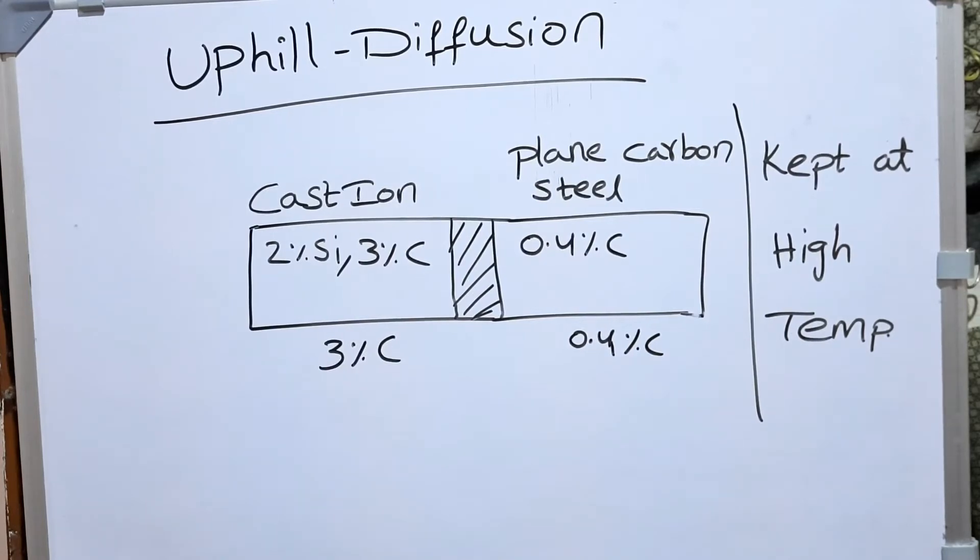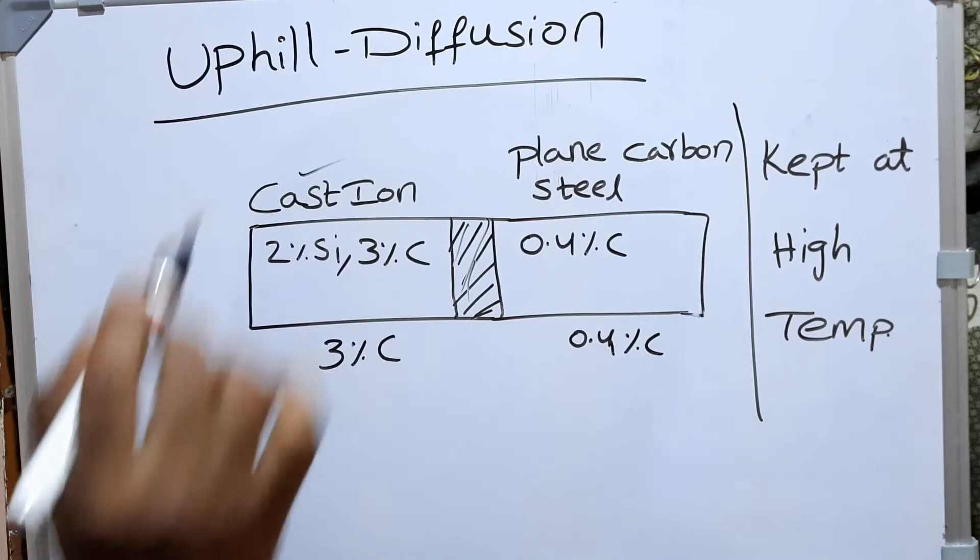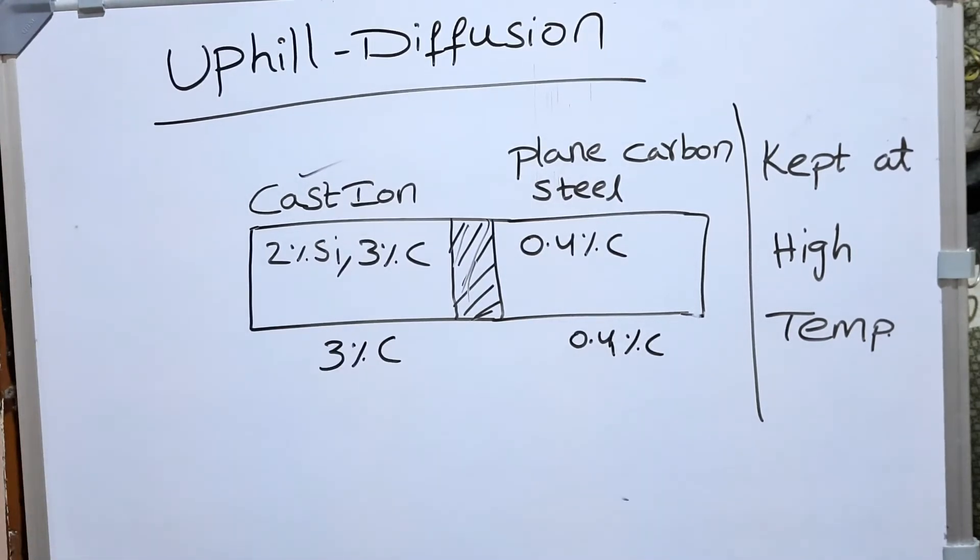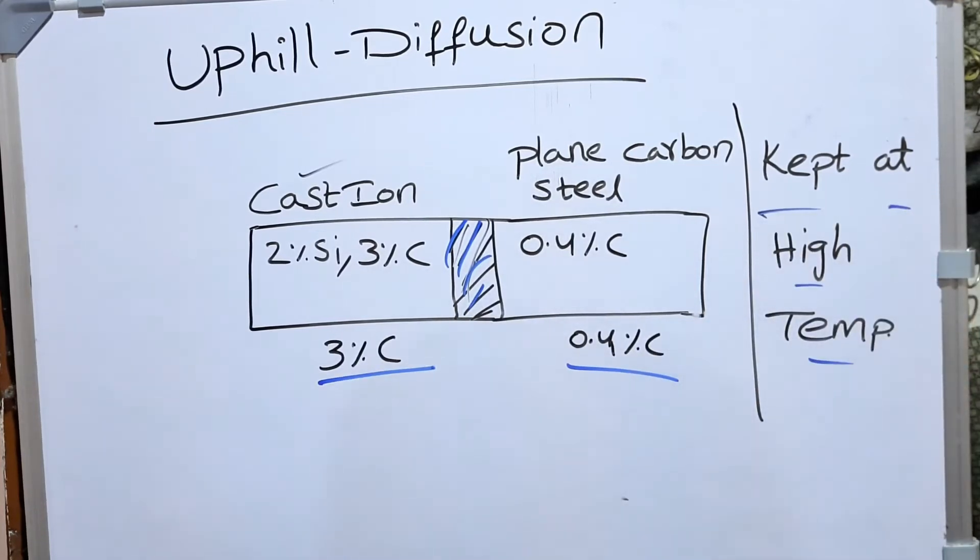Let's discuss this interesting phenomenon with an example. Here we joined, we welded a cast iron with a plain carbon steel strip. Our cast iron is having 3% carbon and our plain carbon steel sample is having 0.4% carbon. We have welded and kept at high temperature for the diffusion to occur.